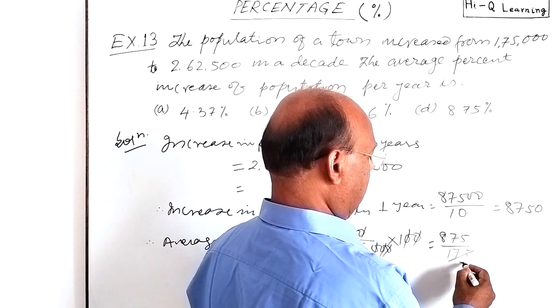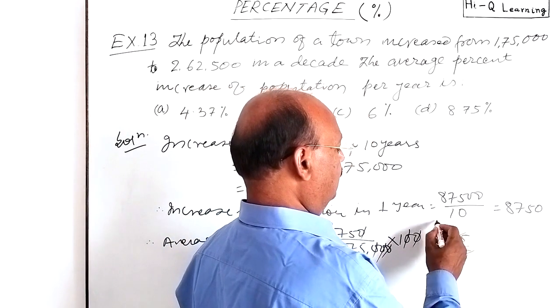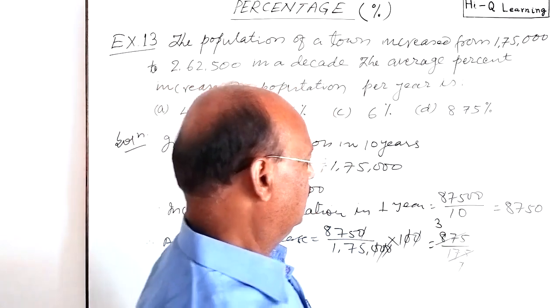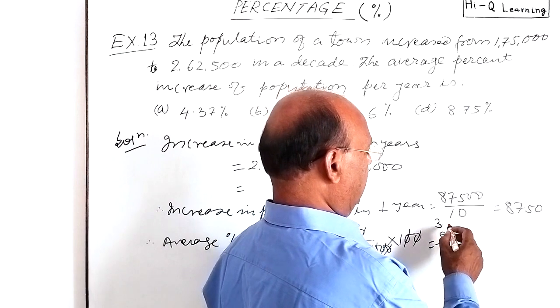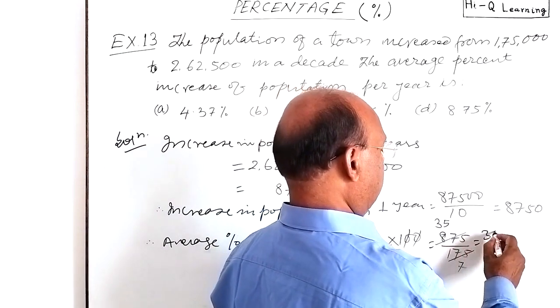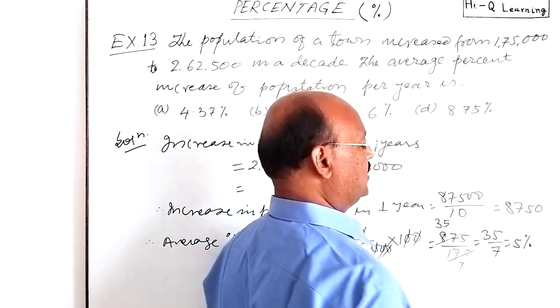We can cancel it with 25. 175 and 25... 75 and 125... 25... So this is 35 by 7, and is equal to 5 percent.